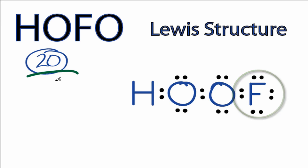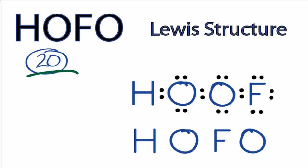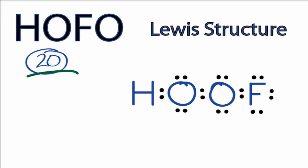So this is the Lewis structure for HOFO. If you drew the structure with the F between the two oxygens, you'd find that your formal charges wouldn't be zero for each of the atoms. In fact, you'd have a plus one charge on the fluorine, and that doesn't really make sense since fluorine is more electronegative. So this is going to be the best Lewis structure for HOFO. This is Dr. B, and thanks for watching.